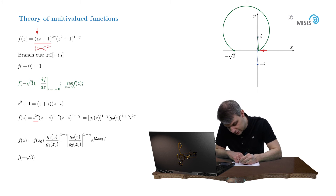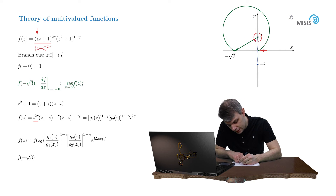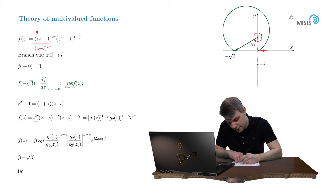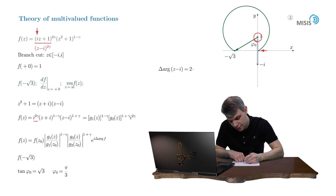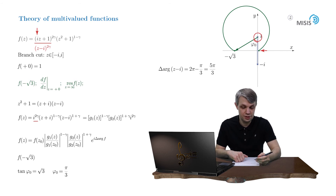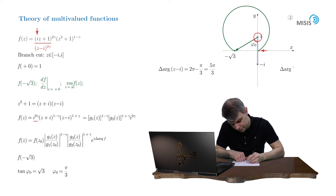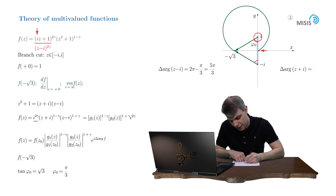For the arrow z minus i: as we see it rotates by almost 2 pi with the subtraction of this angle, which can be identified from trigonometric considerations. The tangent of this angle is simply square root of 3, so this angle is pi over 3. As a result, the change of the argument of z minus i is 2 pi minus pi over 3, which is 5 pi over 3. Now the change of the argument of z plus i: in the same counterclockwise direction, we see it's simply pi over 3.